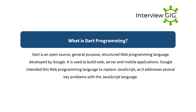What is Dart programming? Dart is an open-source, general-purpose, structured web programming language developed by Google. It is used to build web, server, and mobile applications. Google intended this language to replace JavaScript, as it addresses several key problems with JavaScript.